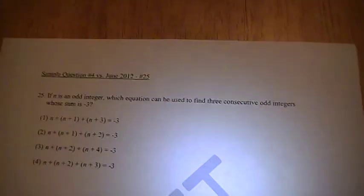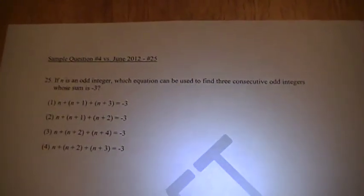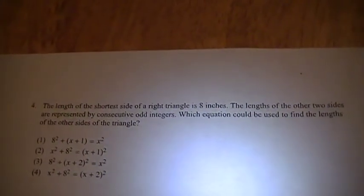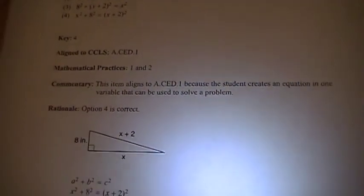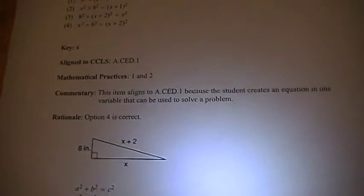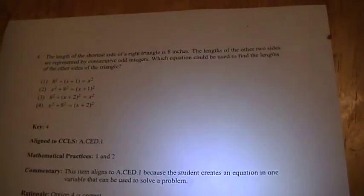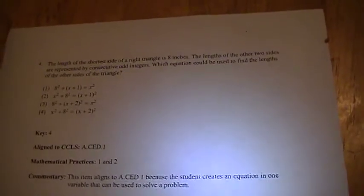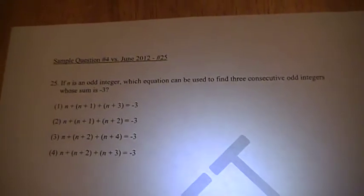And number four looks like this. This is the old: if n is an odd integer, which equation can be used to find three consecutive odd integers. This one connects it with the Pythagorean theorem. It has a right triangle with the shortest side and then asks us to write algebraic equations. The answer here shows a right triangle with the three different sides. So you can see in Common Core what they're trying to do is create an equation used to solve a problem, as opposed to here where they're just having algebra not connected to geometry.